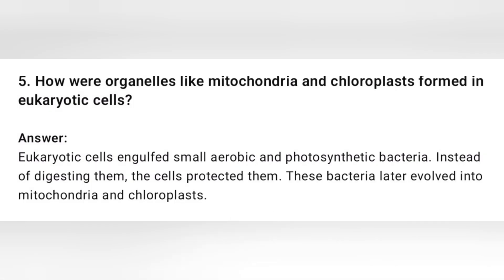How were organelles like mitochondria and chloroplasts formed in eukaryotic cells? Eukaryotic cells engulfed small aerobic and photosynthetic bacteria. Instead of digesting them, the cells protected them. These bacteria eventually evolved into mitochondria and chloroplasts.